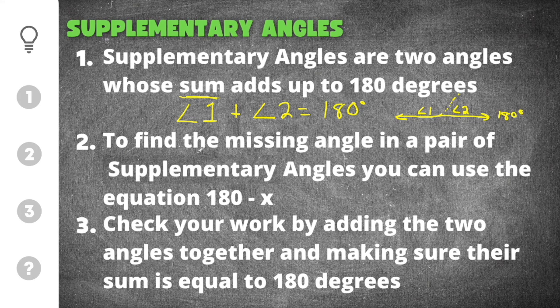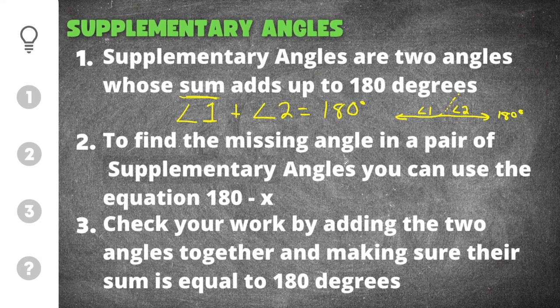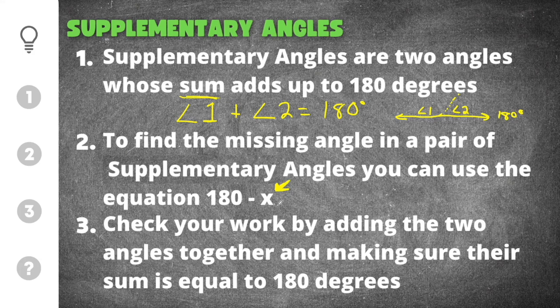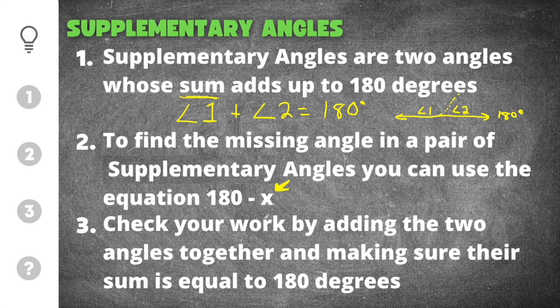Now the way to find the missing angle in a pair of supplementary angles is to use the equation 180 degrees minus x. Now x in this case is going to be the angle that you know. So it's whatever angle you have. And after you subtract that will be your answer.